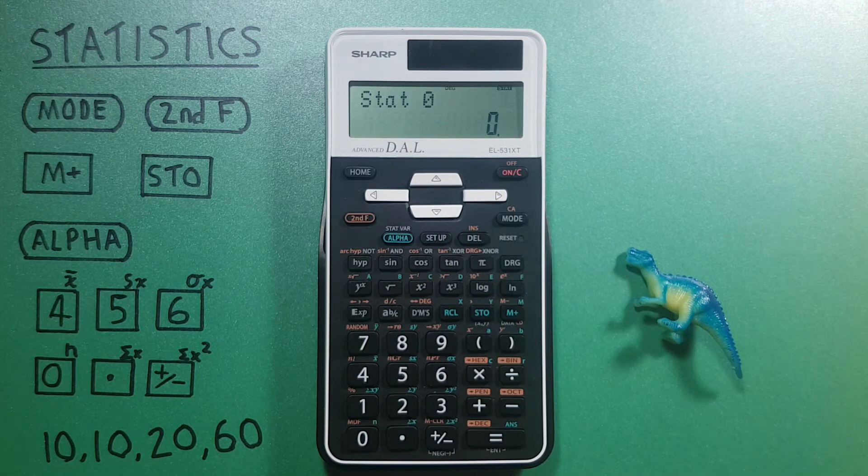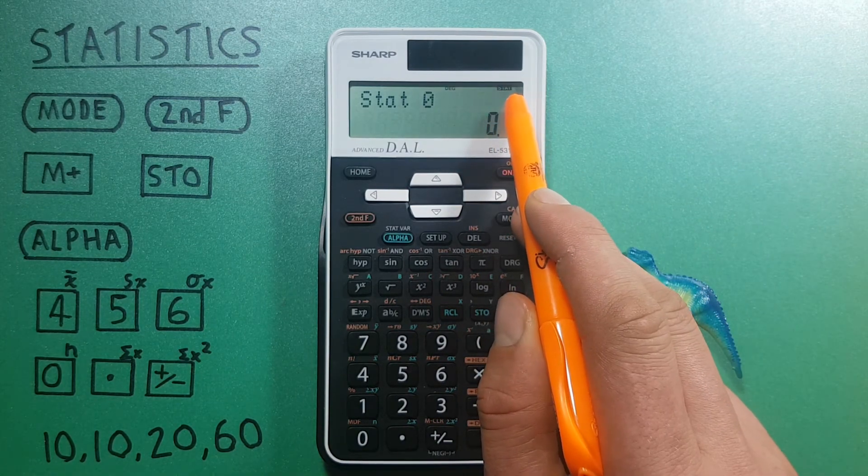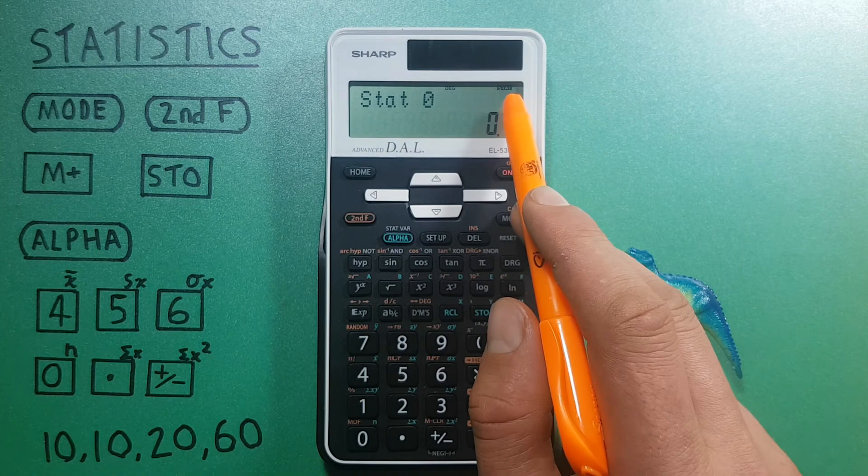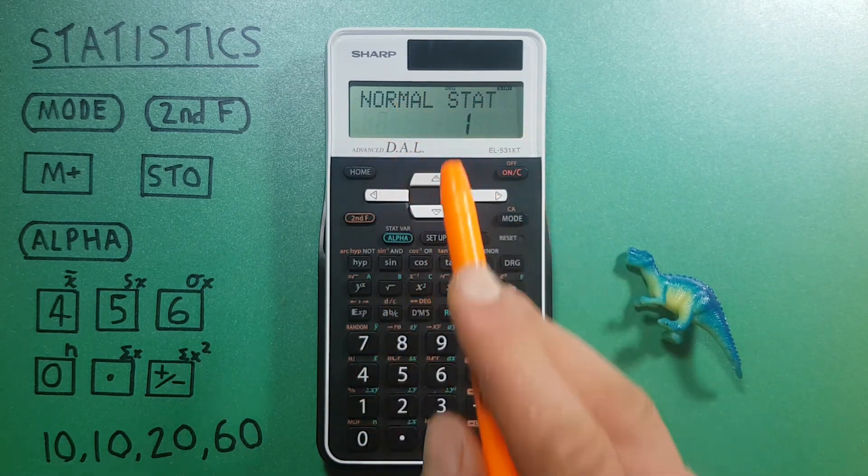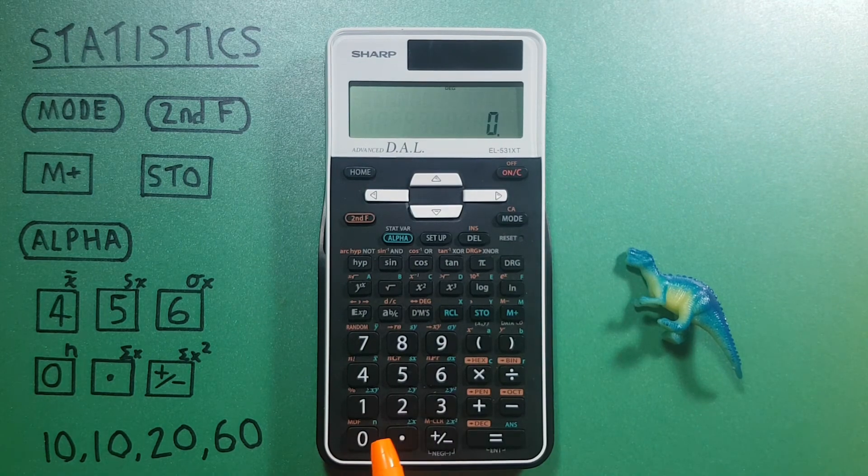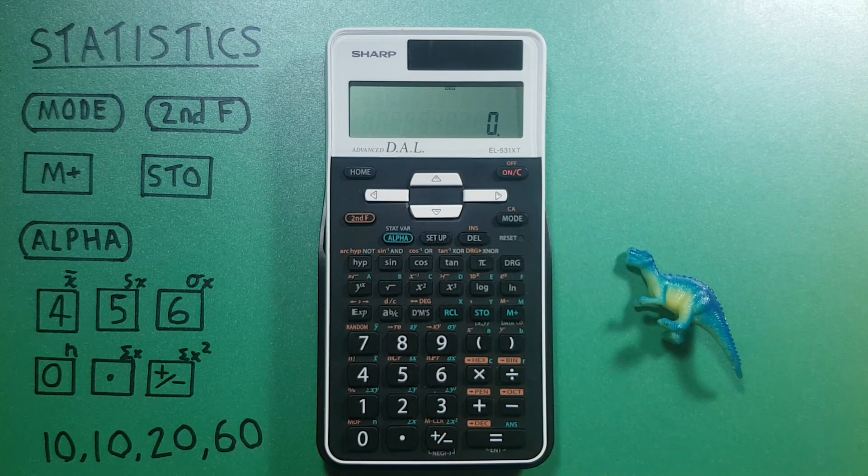If we're done with our statistics mode, see this word stat at the top of the screen. We want to go back to our regular mode. So we go to mode and change it from stat to normal. So we can press zero. And we're back into our default mode. The word stat has disappeared. And we're good to go back to our regular calculations.